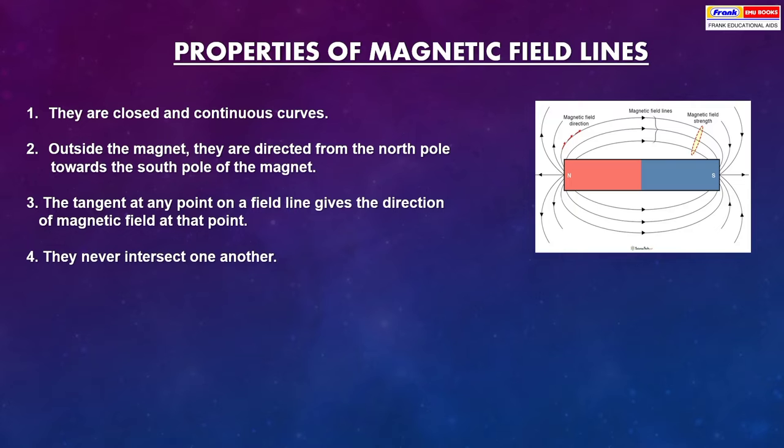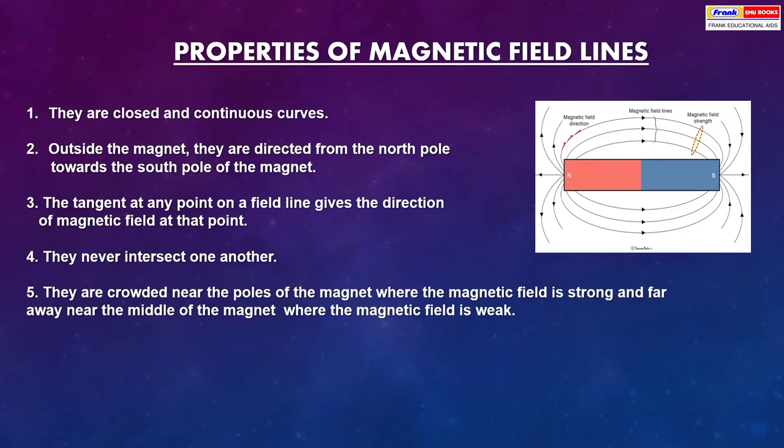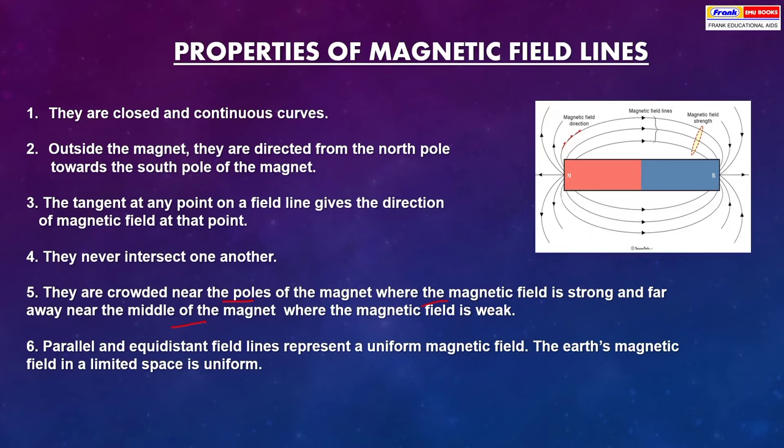No curves of magnetic field lines intersect one another. This is one of the unique properties of magnetic field lines. They are crowded near the poles of the magnet where the magnetic field is strong and far away near the middle of the magnet where the magnetic field is weak.